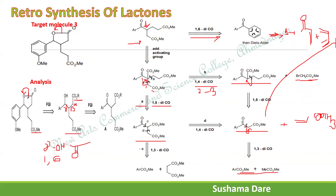After the 1,5-dicarbonyl disconnection, it gives the intermediate compound. Then again a 1,3-dicarbonyl compound is encountered. Among these various possible routes, we now look at which route to follow during the synthesis.